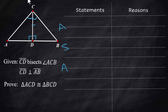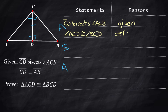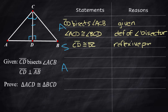ASA will help organize the proof. For the first angle: CD bisects angle ACB — that's given. Angle ACD is congruent to angle BCD by the definition of an angle bisector. For the side: CD is congruent to DC by the reflexive property.